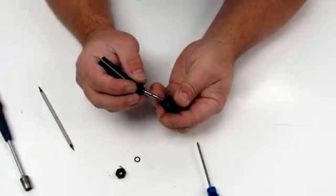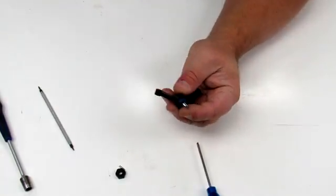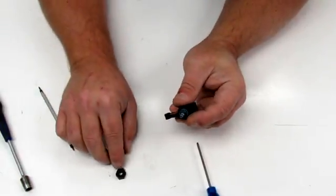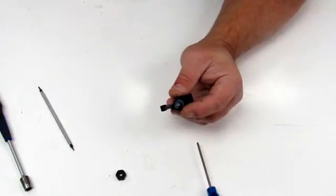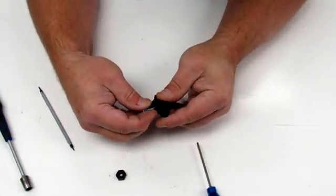Take our drive shaft. Push that through. Grab our little washer. Put it right back on there. Take that little drive pin. Shove that back through there.